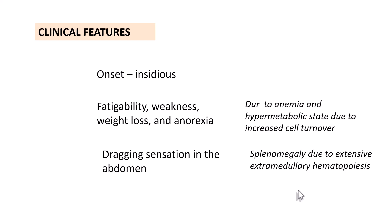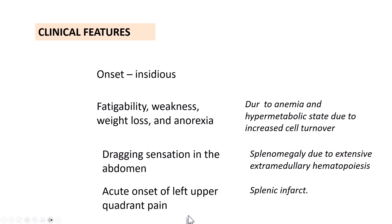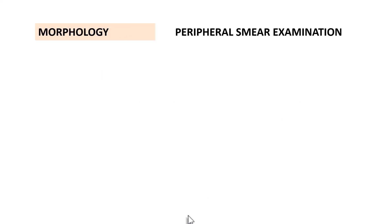Because of extensive hematopoiesis even in extramedullary sites like the spleen, you have splenomegaly, and most often patients present with a dragging sensation in the abdomen. Since there can be a splenic infarct, patients may present with acute onset of left upper quadrant pain. These are the various clinical manifestations of chronic myeloid leukemia.